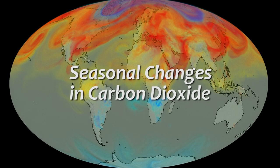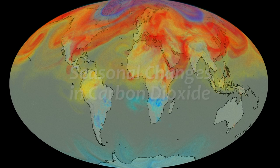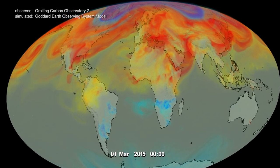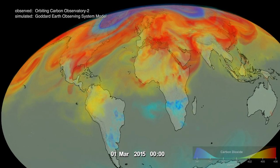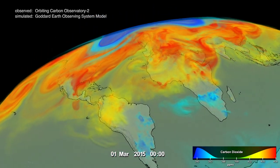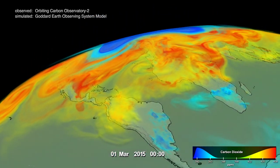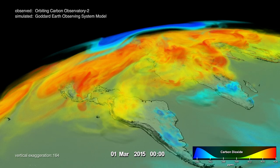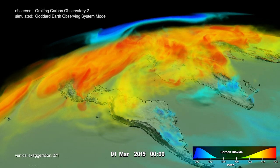This is carbon dioxide, or CO2, in the Earth's atmosphere. It is derived from a synthesis of observed and simulated data. Reds and yellows show regions of higher-than-average CO2, while blues show regions lower-than-average.